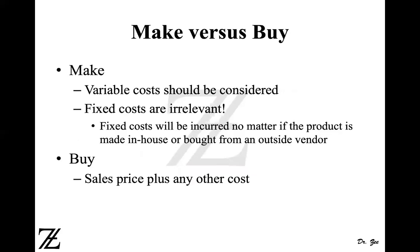When producing in-house, variable costs should be considered. Common fixed costs are irrelevant — they will be incurred regardless of whether the product is discontinued in-house or bought from an external vendor, because in the short run you cannot avoid them. When considering buying, you need to consider the purchase price plus any additional costs such as shipment or certification charges from the external vendor.